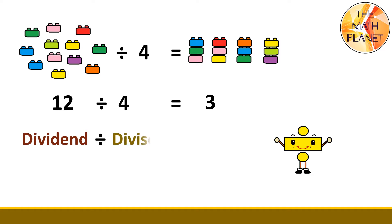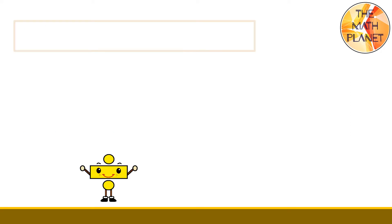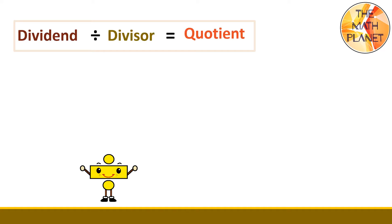Then, we have the divisor. The divisor is the number that we are dividing by. The divisor indicates how many groups we will be dividing our dividend into. Finally, we have the quotient, which is the answer to the division problem. The quotient tells how many items we will end up with in each group. So, this is how the division equation looks like: dividend divided by divisor equals quotient.